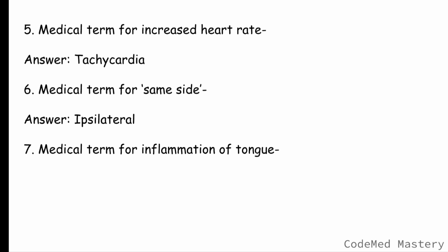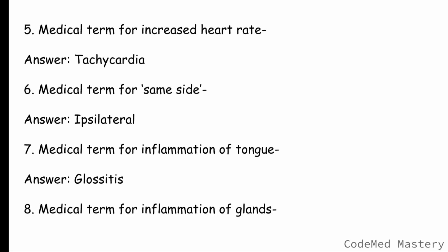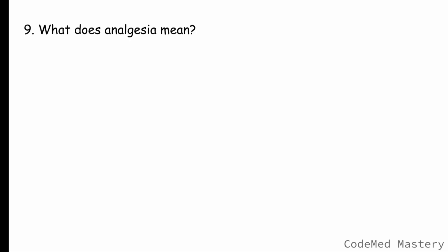Ipsilateral means on the same side and is used to describe structures, processes, or effects occurring on the same side of the body. Next question: what is the medical term for inflammation of the tongue? The correct answer is glossitis. Glossitis is a combination of the Greek word 'glossa,' which means tongue, and the suffix '-itis,' which means inflammation. Next question: what is the medical term for inflammation of glands? The correct answer is adenitis. 'Adeno' means glands and '-itis' means inflammation.